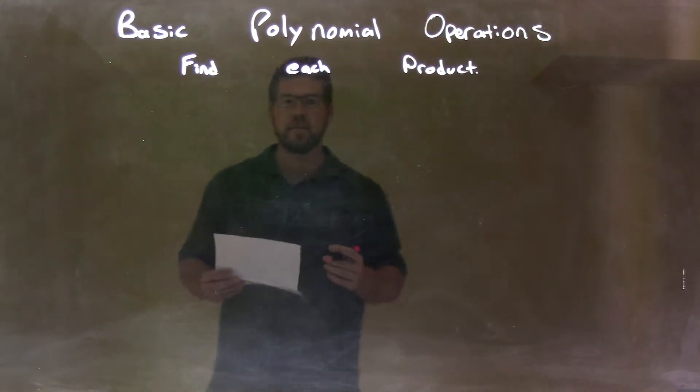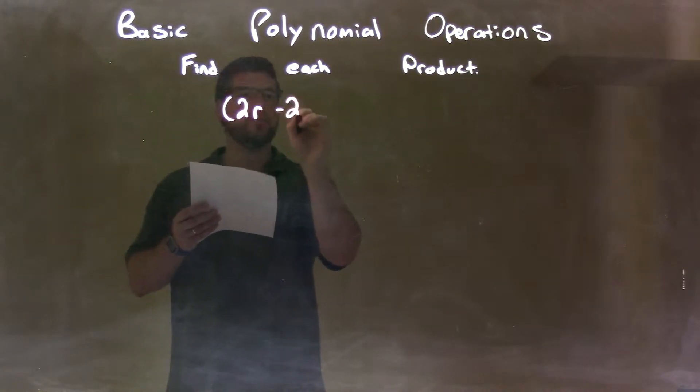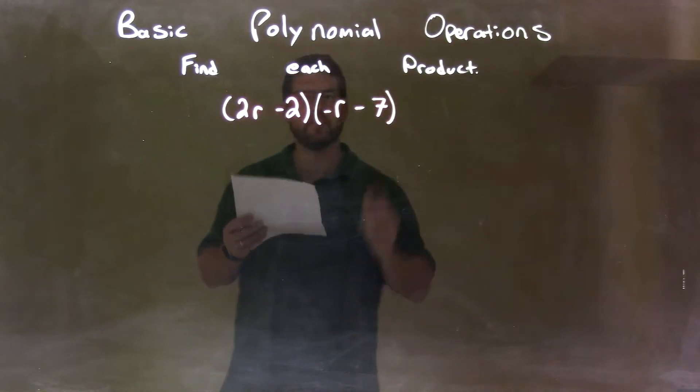If I was given this product, 2r minus 2 times negative r minus 7.